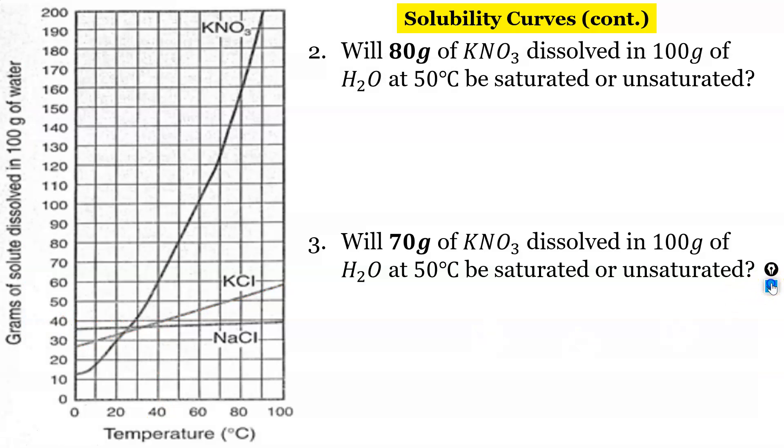Here's another one. So will 80 grams of KNO3 dissolved in 100 grams of H2O at 50 degrees be saturated or unsaturated. All right so KNO3. So let's find that curve. That's this curve right here.